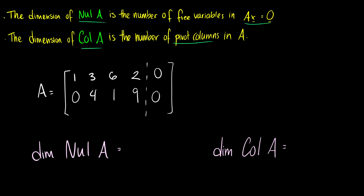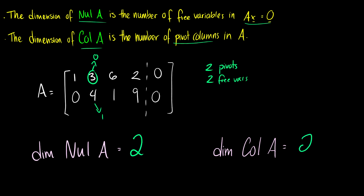We can row reduce this matrix — turning appropriate entries to 0 and 1 with careful multiplication and subtraction. The result will give us two pivot columns and two free variables. So the dimension of the null space is 2, and the dimension of the column space is 2.